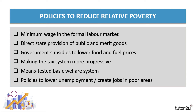There's a list of half a dozen potential policies, including minimum wages, which we're going to focus on in this video. These include: introducing a minimum wage in a formal labour market; direct provision by the state of key public and merit goods; government subsidies to bring down the cost of basic essentials such as food and fuel; reforming the tax system to make it more progressive; exploring and building a means-tested basic welfare system - means-testing is when you allocate benefits according to financial need. And policies to reduce relative poverty must, at their heart, be successful in bringing down unemployment and creating more jobs, better paid jobs, in poor areas.